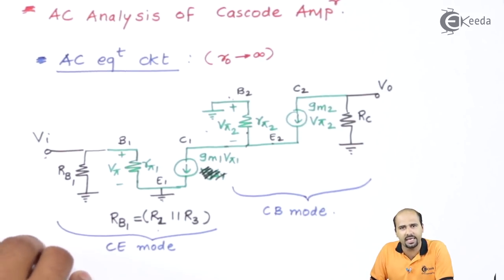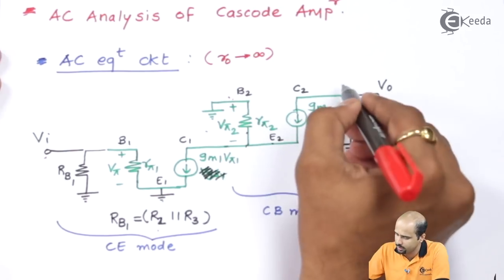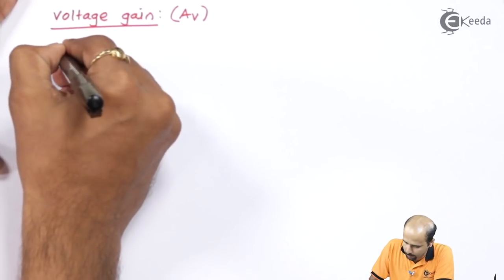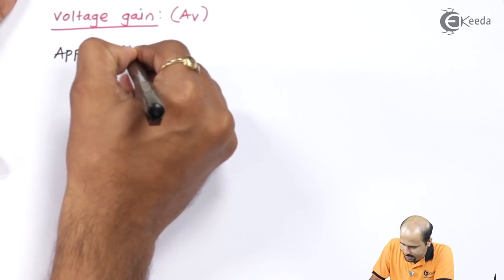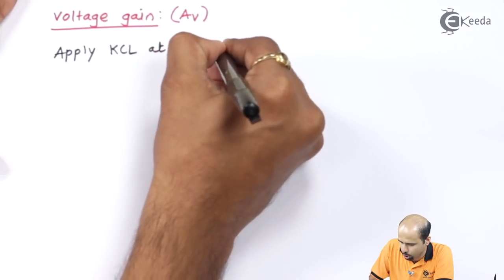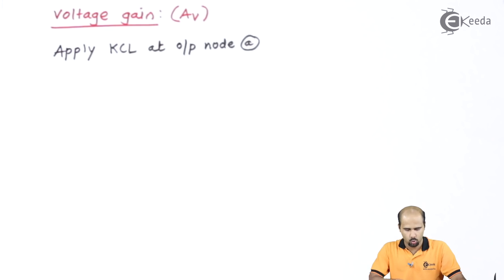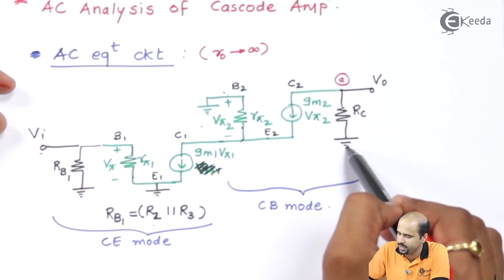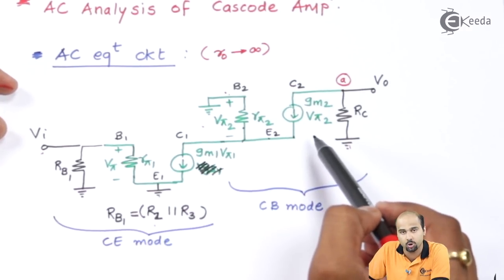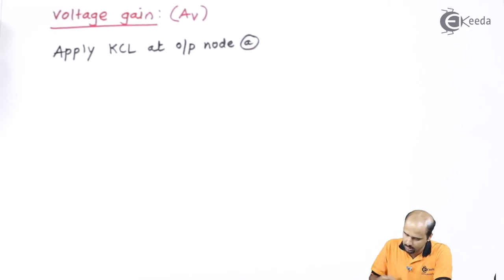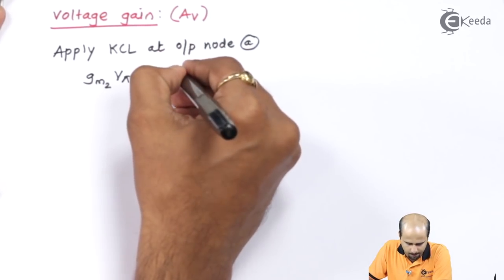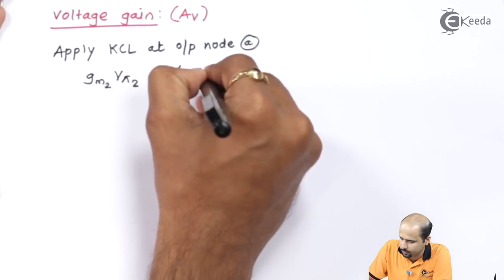We will apply KCL at the output node. That output node is node A. So applying KCL at output node A: we have one current as vo/RC and another current as gm2 multiplied by vπ2. Putting this into the equation: gm2·vπ2 + vo/RC = 0.